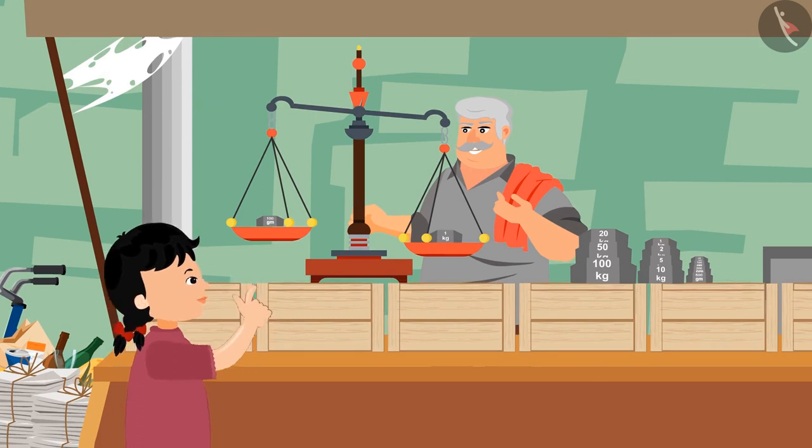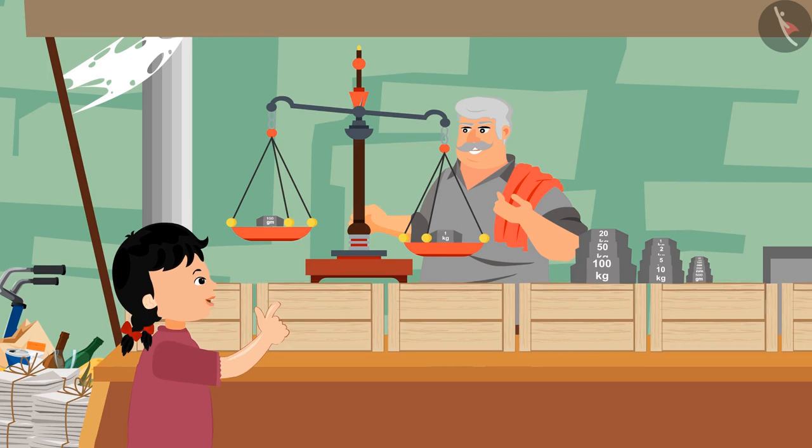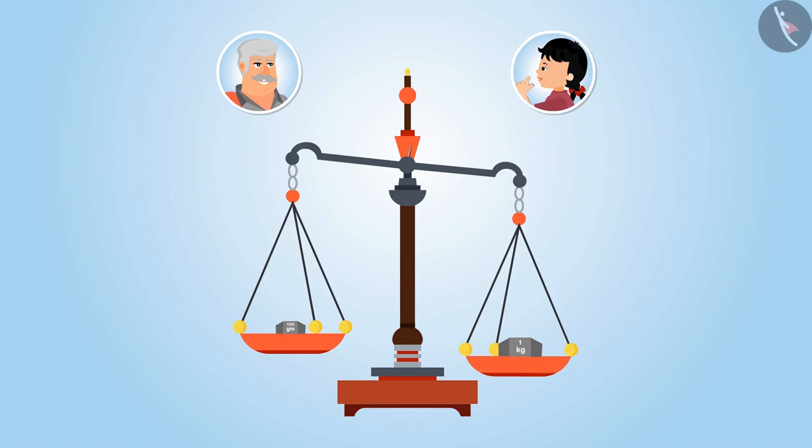Uncle, see, I'm placing the weighing stones on both sides, still the needle is not getting balanced. This is because weight on both sides is different. No uncle, look, this is of 1 kg and this is of 100 grams. Both are equal, right?